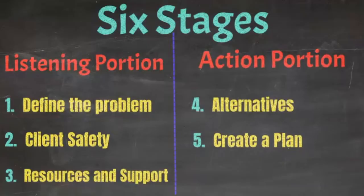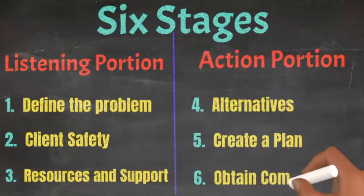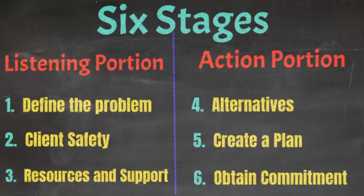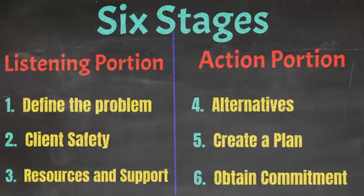The last step of the six-step model is obtaining a commitment. You want to obtain a commitment from the client — they should come up with something that will be their ultimate goal. You can give them ideas, but you definitely want them to come up with the final commitment. They should be the collaborative person leading the charge in all six of these steps. This is definitely a collaborative crisis model.